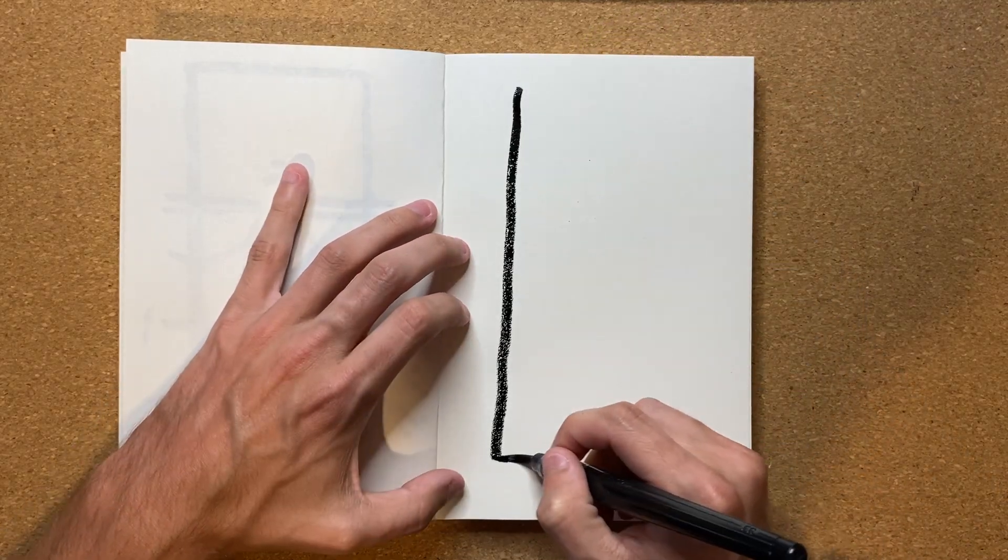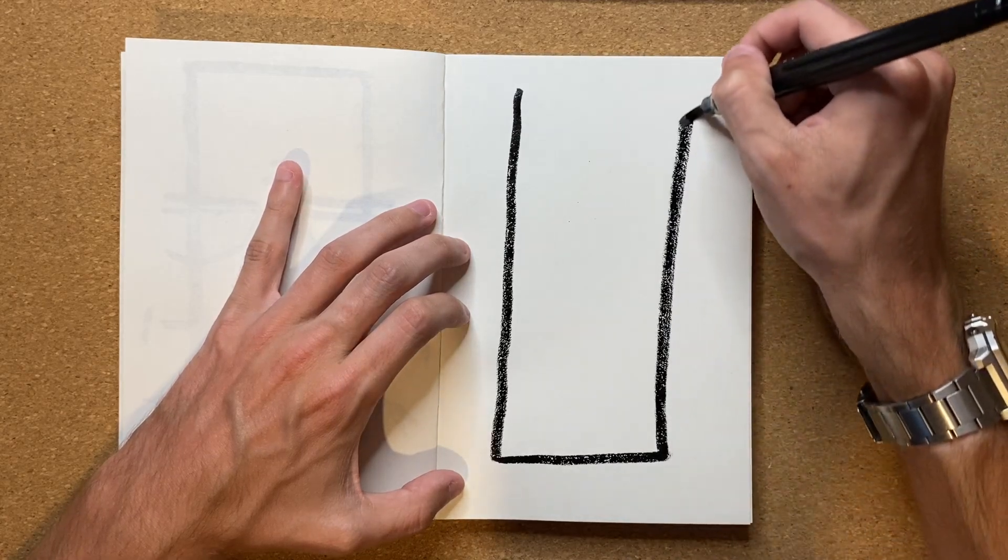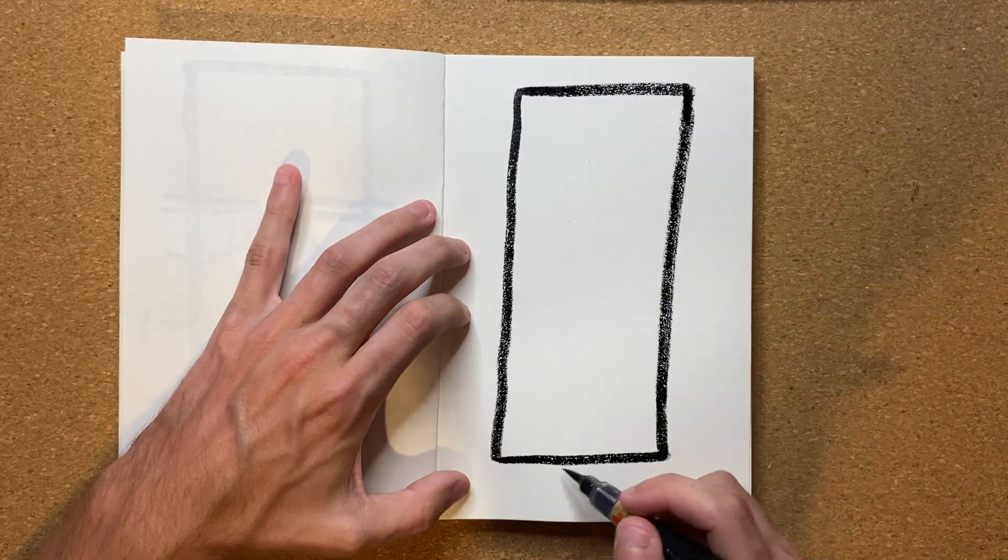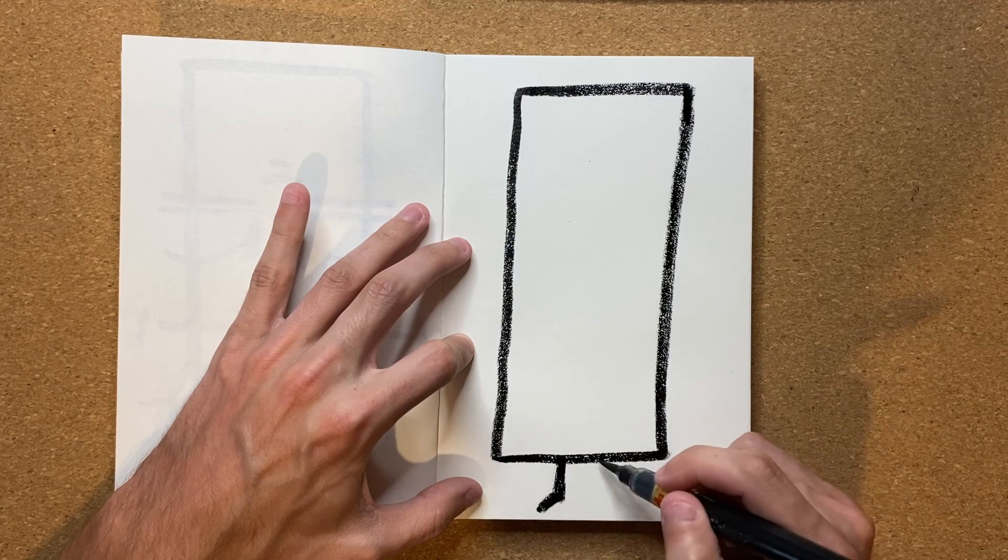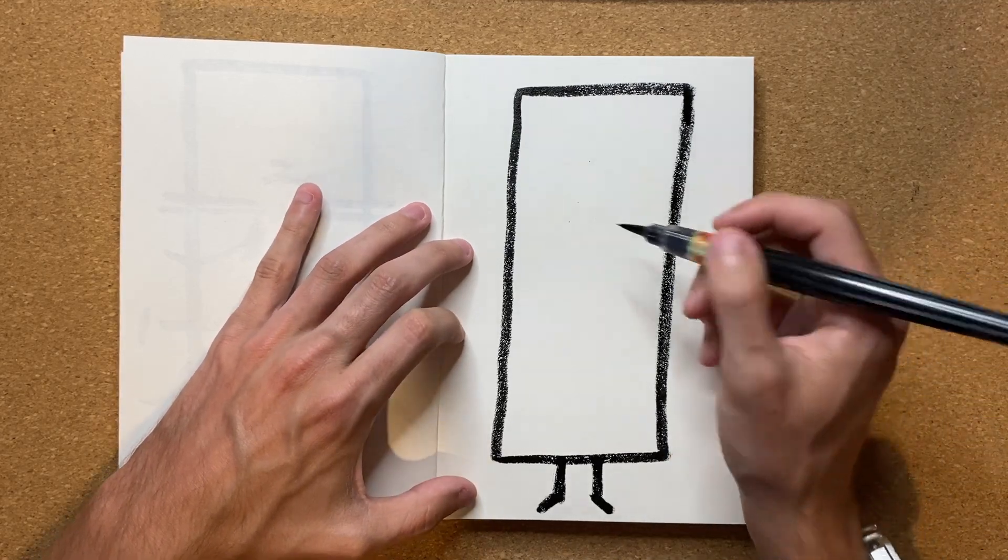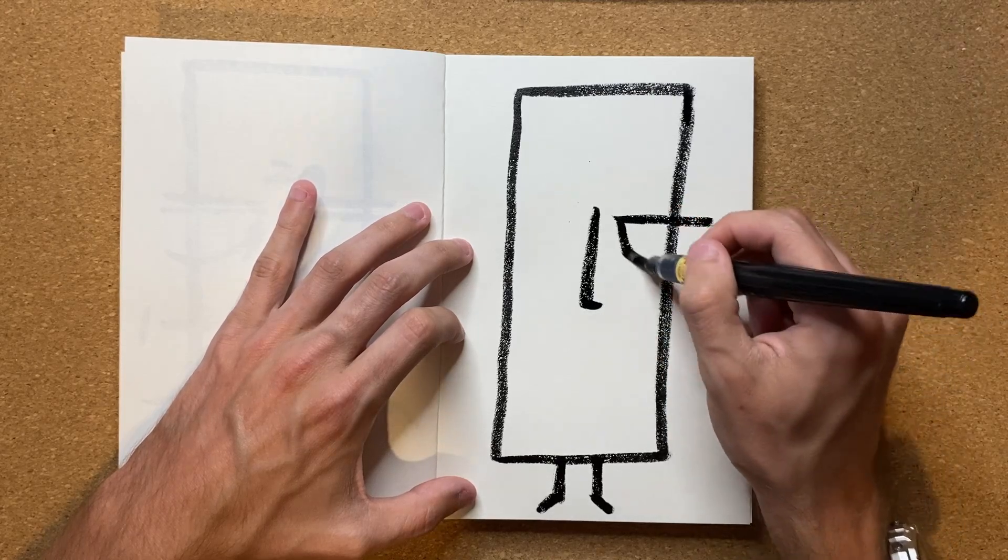Let's go ahead and start up here. Bring it all the way down, all the way over, and all the way back up and across. There we go. Let's give it some legs once again. And let's go ahead and do a nose, a little bit higher up this time, another face.